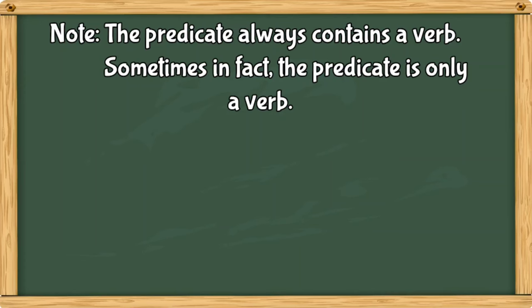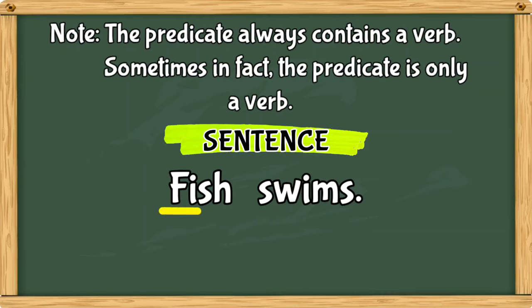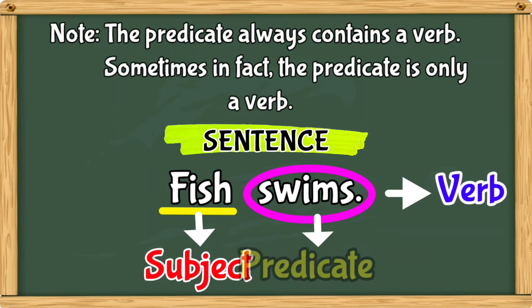Note that a predicate always contains a verb. Sometimes, in fact, the predicate is only a verb. Here's a sample sentence: Fish swims. Fish is the subject, and swims is the verb. And swims also is the predicate.